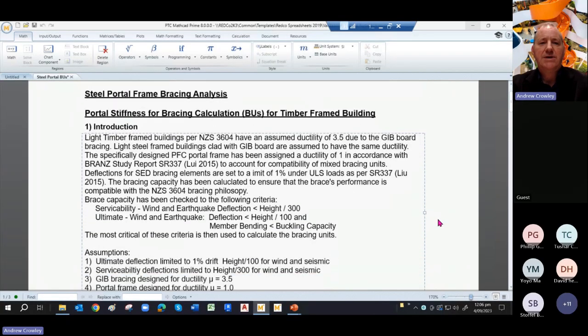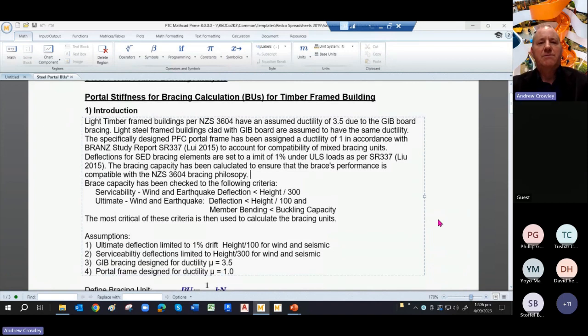Some background information to the calculation. This is presenting calculations as I'd like to present them and review them. Light timber frames as designed by NZS3604 usually have an assumed ductility of 3.5 due to the jib board bracing.